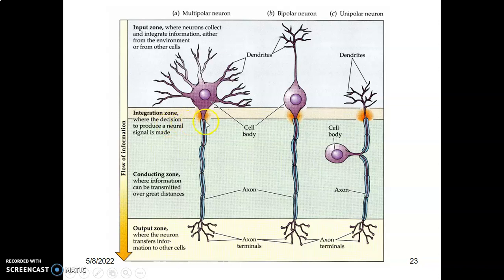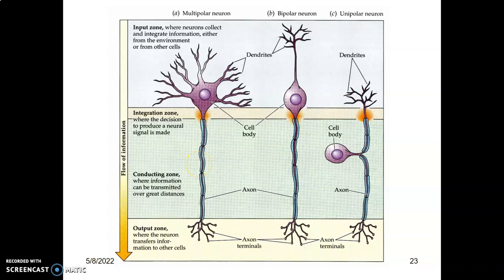The other thing I didn't mention was that a single neuron is usually covered by endoneurium, and then a bundle of neurons — a fascicle — the axons are covered by perineurium, and the whole nerve is covered by epineurium.